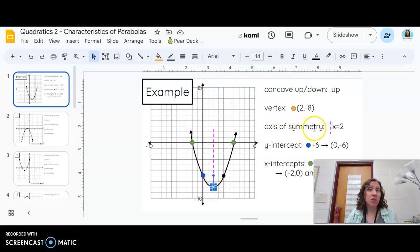Axis of symmetry is the line of symmetry. So where this pink dotted line is, you have the same thing on both sides. So the vertex is along that line.